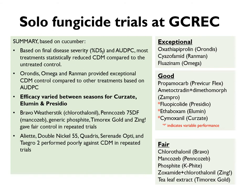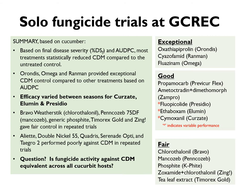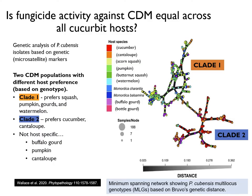However, remember that these results are from cucumber. The big question is whether fungicide activity against cucurbit downy mildew is equivalent on other cucurbit hosts. Recent research by Lena Quesada's group at North Carolina State University used genetic markers to show that P. cubensis isolates recovered from various cucurbit hosts could be split into two distinct genetic groups, referred to here as clades.